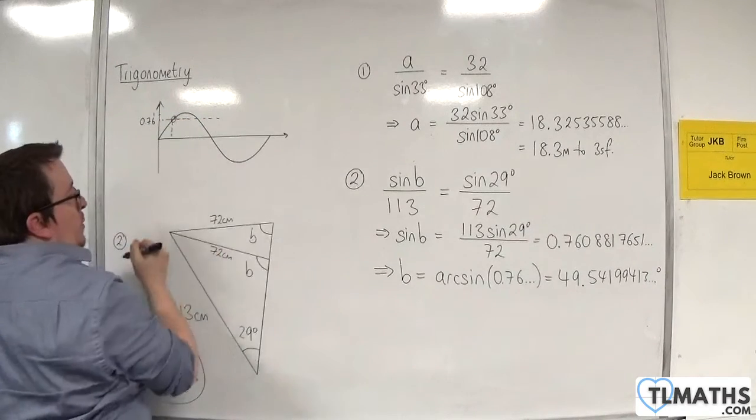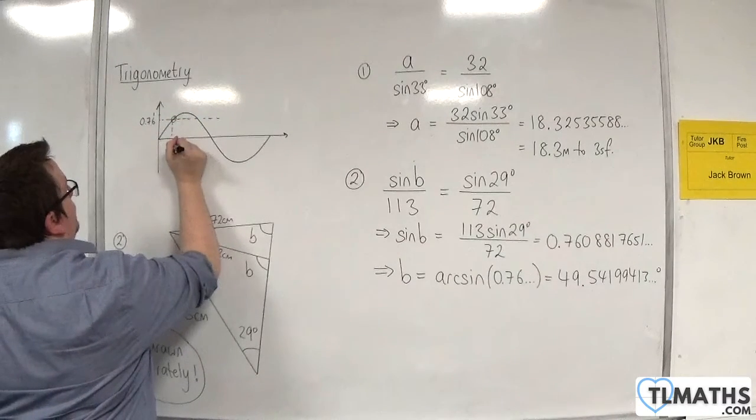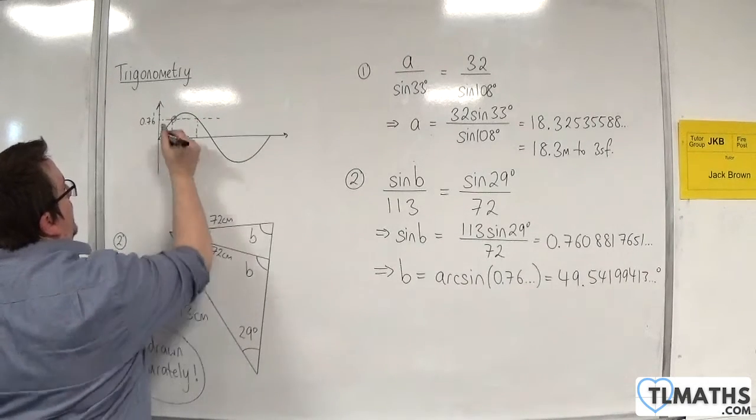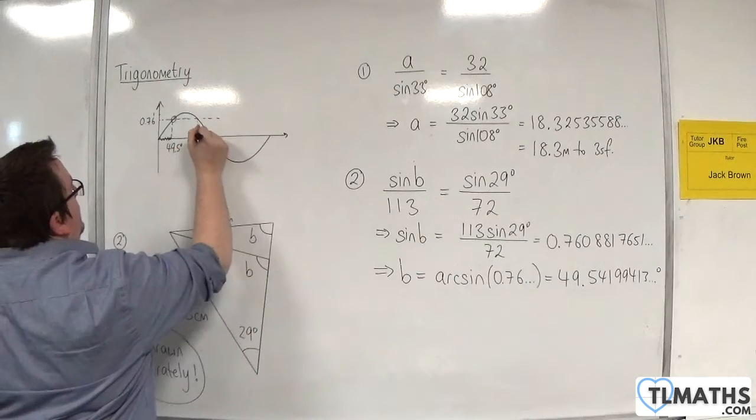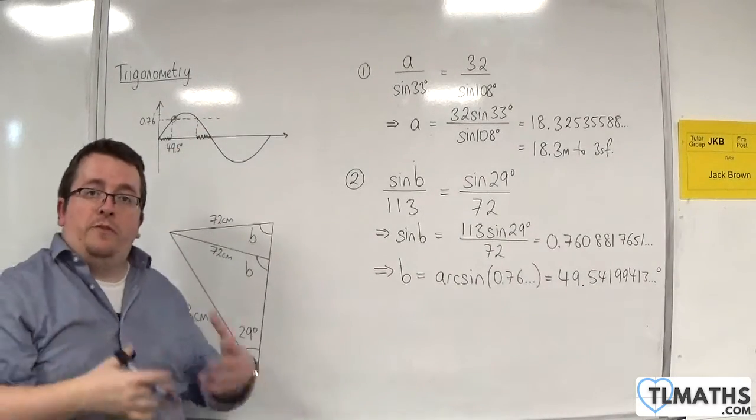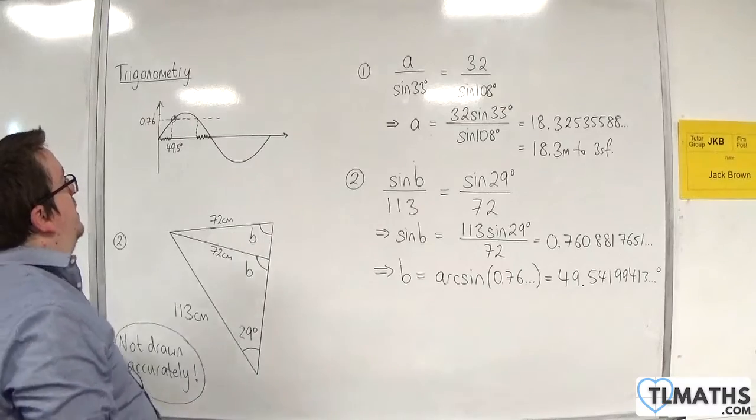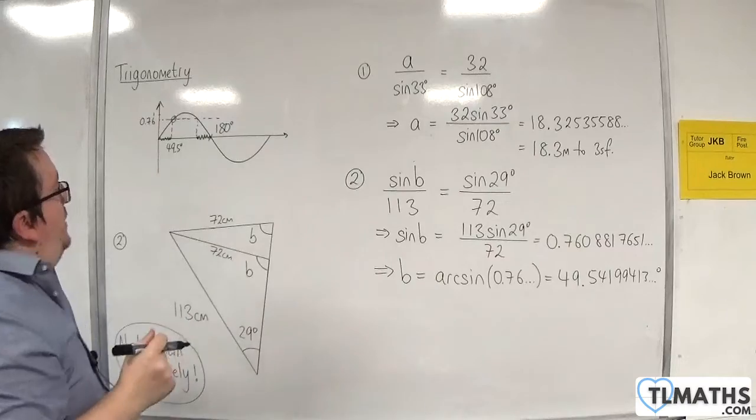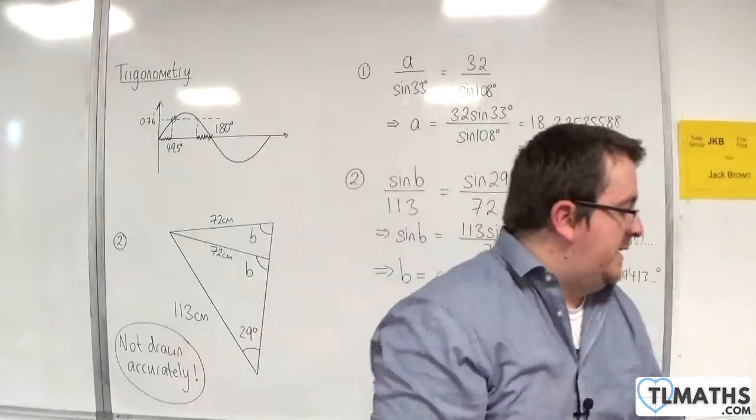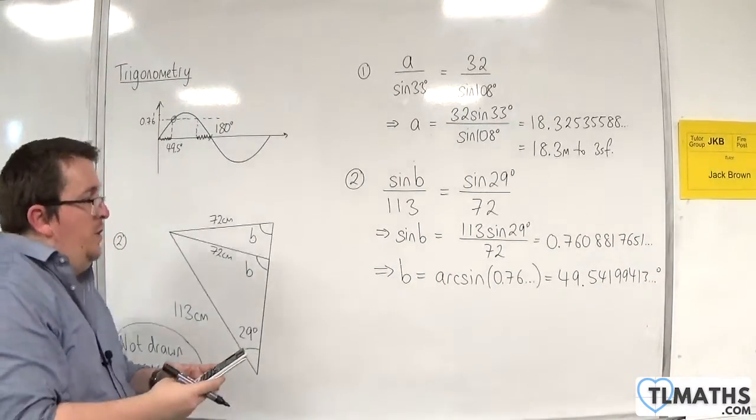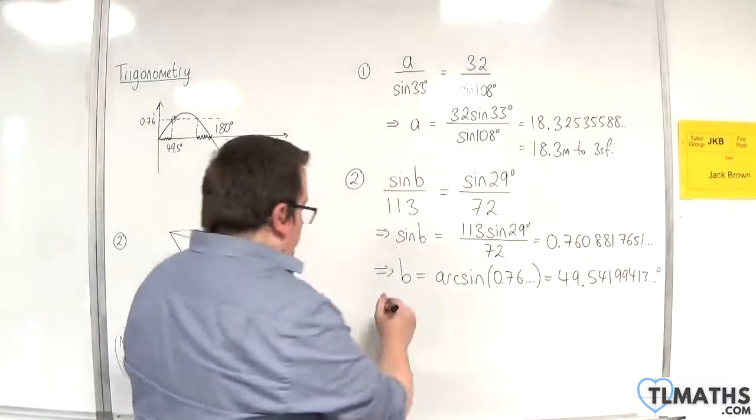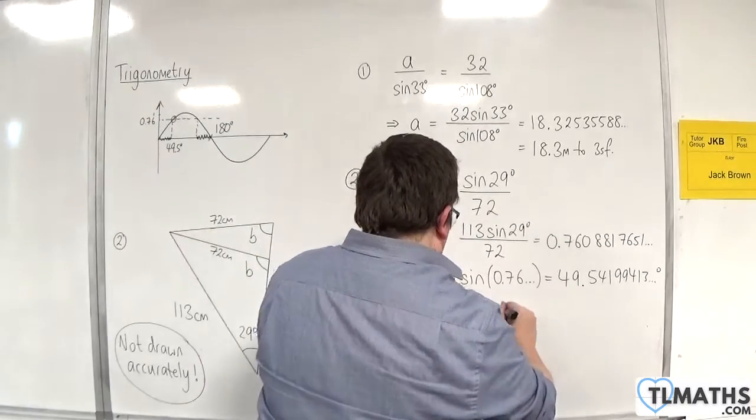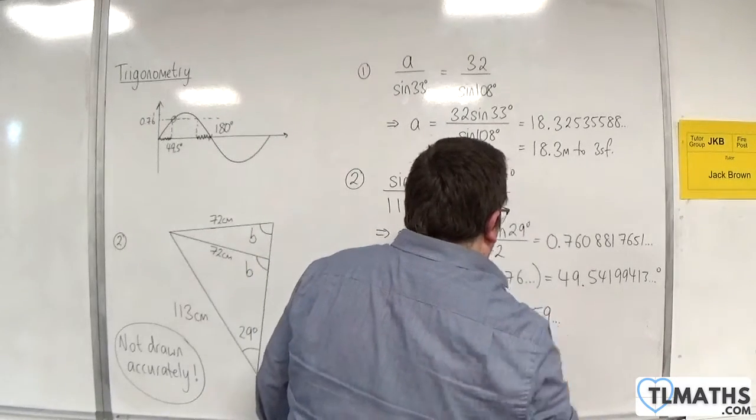This is the first solution we found, which is 49.5. But that horizontal line crosses the curve there also. If that distance is 49.5, then that distance has to be 49.5 by the symmetry of the curve. This point is 180 degrees, so it's actually 49.5 degrees down from 180. If I take 49.5 away from 180,